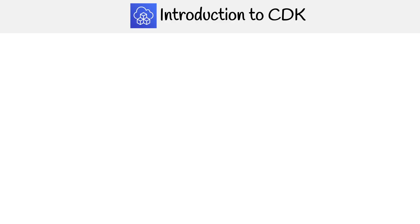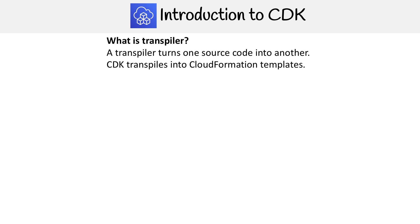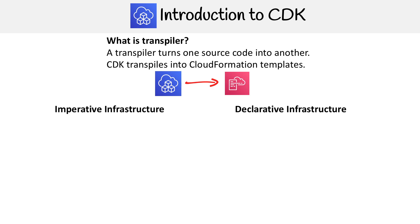Alright, so to understand CDK, I want to talk about transpilers for a moment. A transpiler turns one source code into another. CDK transpiles into CloudFormation templates. So just a simple diagram — we have CDK on the left, and then that turns into CloudFormation templates under the hood.